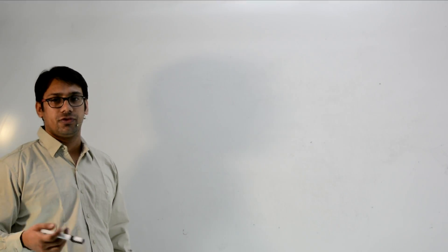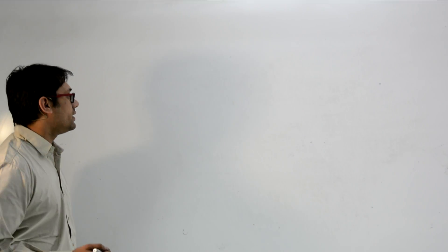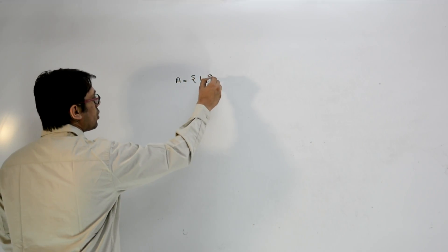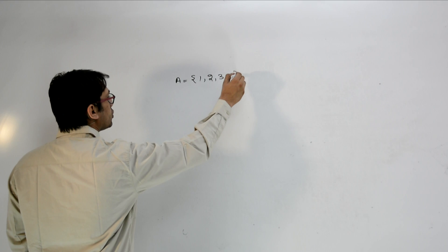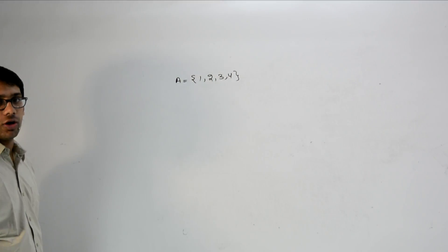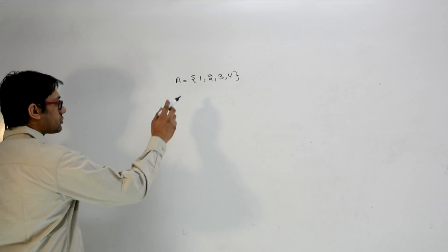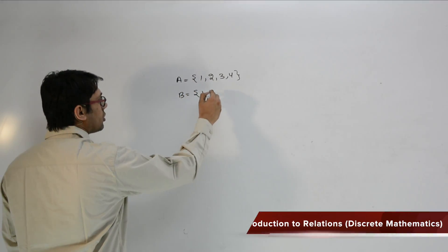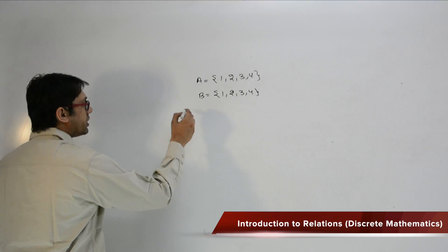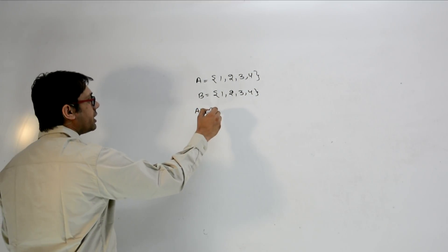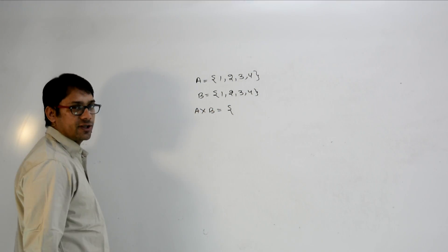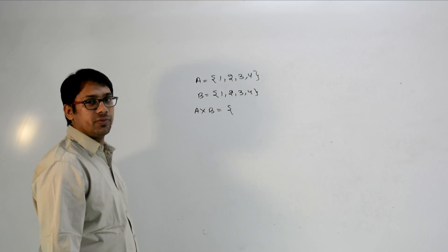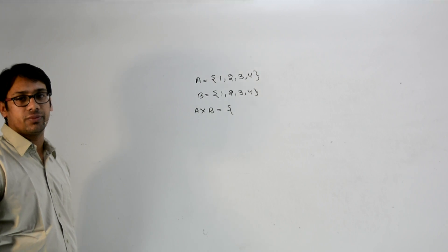Now let us look at a few examples of relations. Assume we have a set A containing 1, 2, 3, 4, and a set B also containing 1, 2, 3, 4. Now what is A cross B? A cross B is going to contain 4 into 4, that means 16 elements.